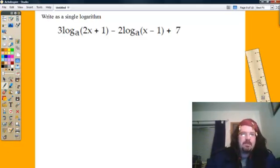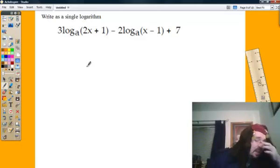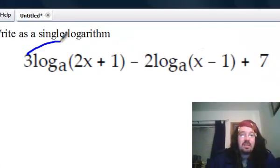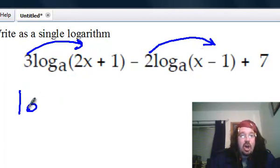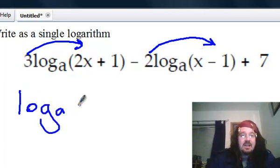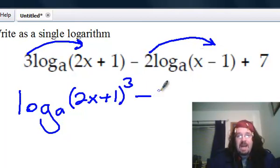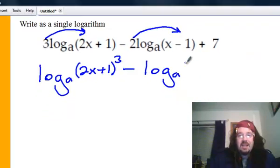Anyway, let's solve this problem. The first thing I'm going to do is take the number in front of the logarithm and move it up inside, because you can't squish logarithms together until you've got the exponents inside them. So I'm going to take the 3 and move it inside and make it an exponent, and take the 2 and move it inside and make it an exponent. So I get log base a of (2x+1) to the third minus log base a of (x-1) squared, plus...